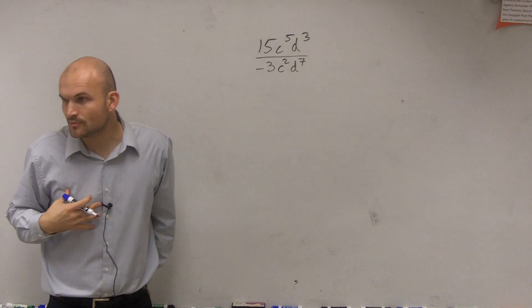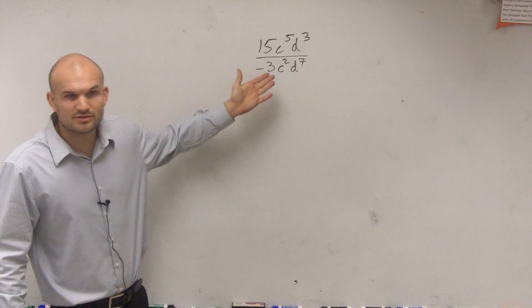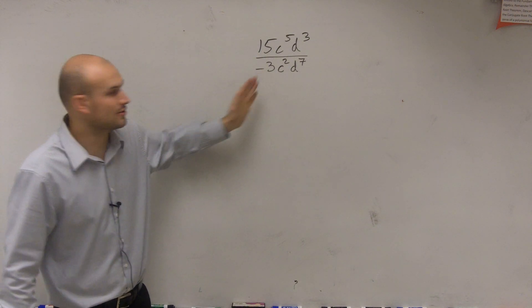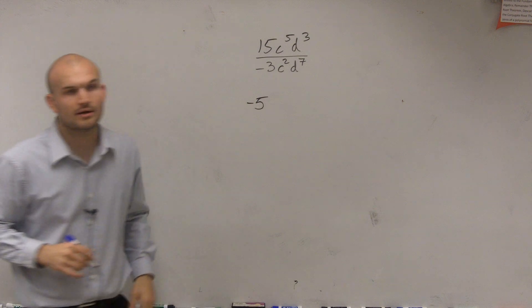Again, just by applying our rules, we have our numbers. There's no special rule with numbers. When we're dividing, we divide. 15 divided by negative 3 is going to give us negative 5.